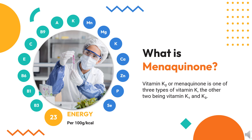When there are no isoprenyl side chain units, the molecule is vitamin K3. This is usually made synthetically and is used in animal feed. It was formerly given to premature infants, but due to inadvertent toxicity in the form of hemolytic anemia and jaundice, it is no longer used for this purpose.